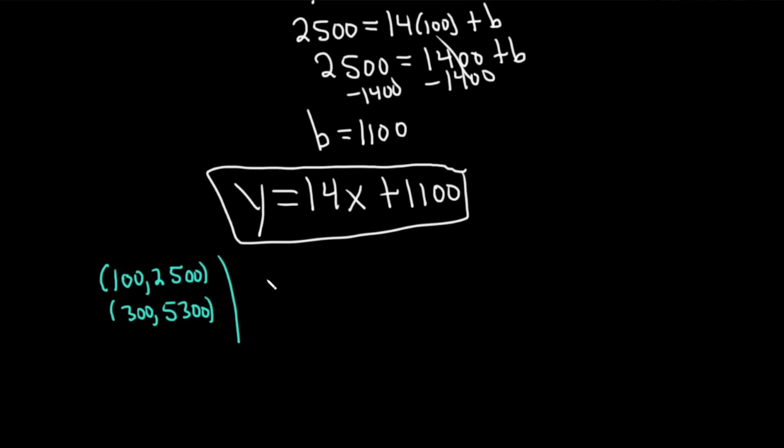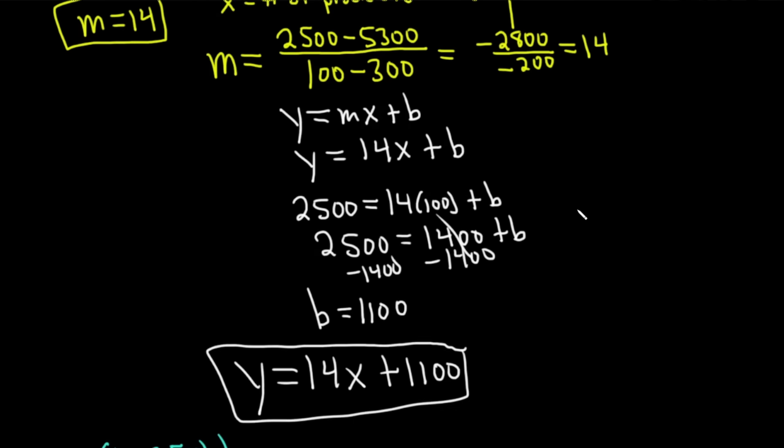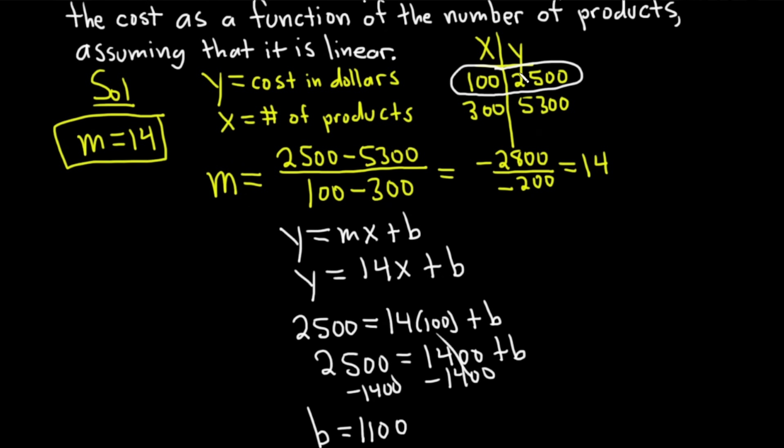So now what we can do is we can check our answer, okay? We can check our answer. I'm getting these, by the way, from the table, right? From the table. Basically, these are ordered pairs. That's the x-coordinate is 100. The y-coordinate is 2,500. And similarly for the other point, 300, comma, 5,300.